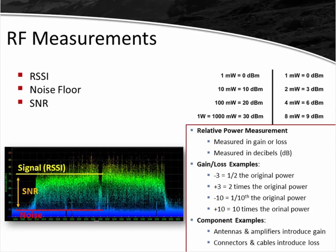Here's a useful reference: 1 milliwatt equals 0 dBm, 10 milliwatts equals 10 dBm, 100 milliwatts equals 20 dBm, and 1 watt (1000 milliwatts) equals 30 dBm. These are good starting points to memorize because when doing RF math you can jump to a number you already know and go from there. For example, if you already know 20 dBm is 100 milliwatts and you need to figure out what 23 dBm is, all you have to do is add 3 dB from there.